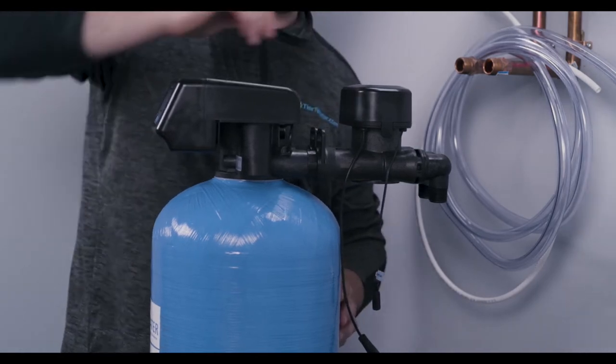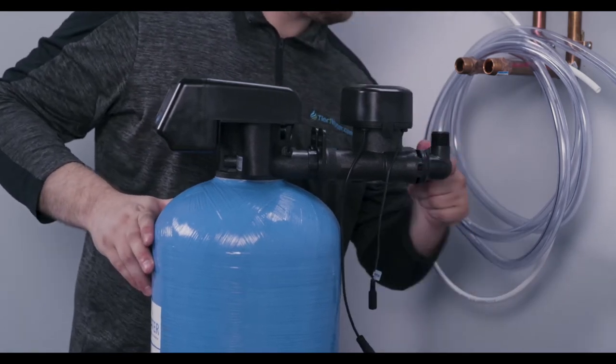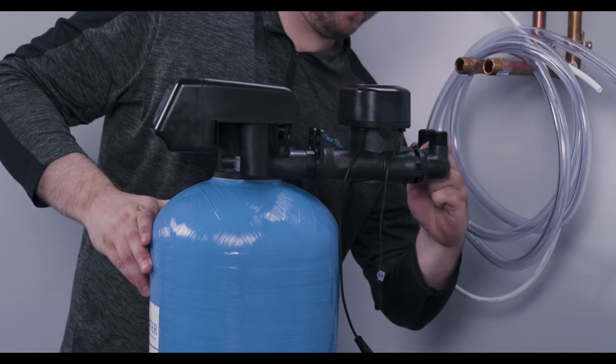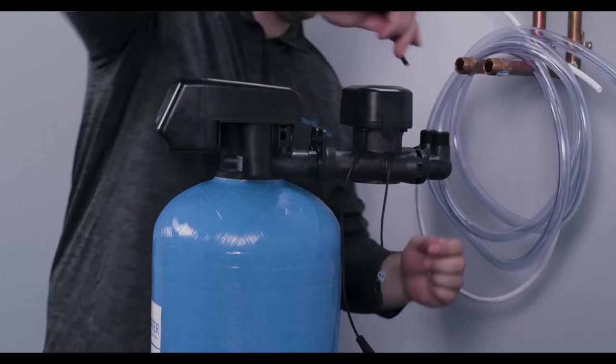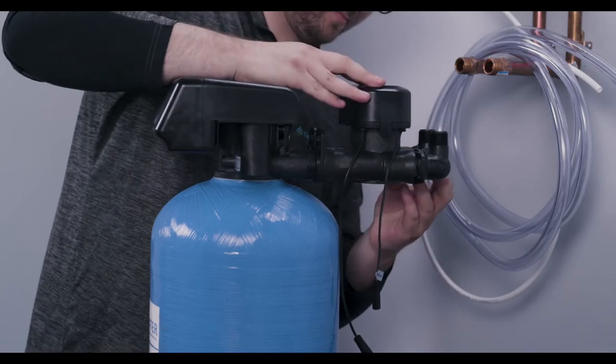Next, make sure the inlet and outlet elbow connectors are attached to the pipe connection end of the bypass valve. Turn the connectors to the appropriate direction for your installation, then insert the remaining two plastic clips to secure them.